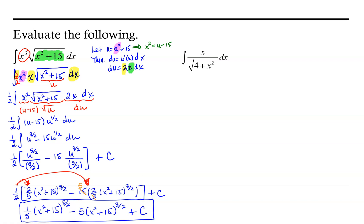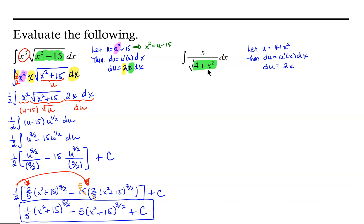Let's take a look at our second example: the integral of x over the square root of 4 plus x squared. We're going to look for a possible composition of functions. I notice that I have 4 plus x squared as the argument to a square root function. So I'm going to let u equal 4 plus x squared. If I do this, then my du will be u prime of x dx, and in this case u prime of x is 2x dx.